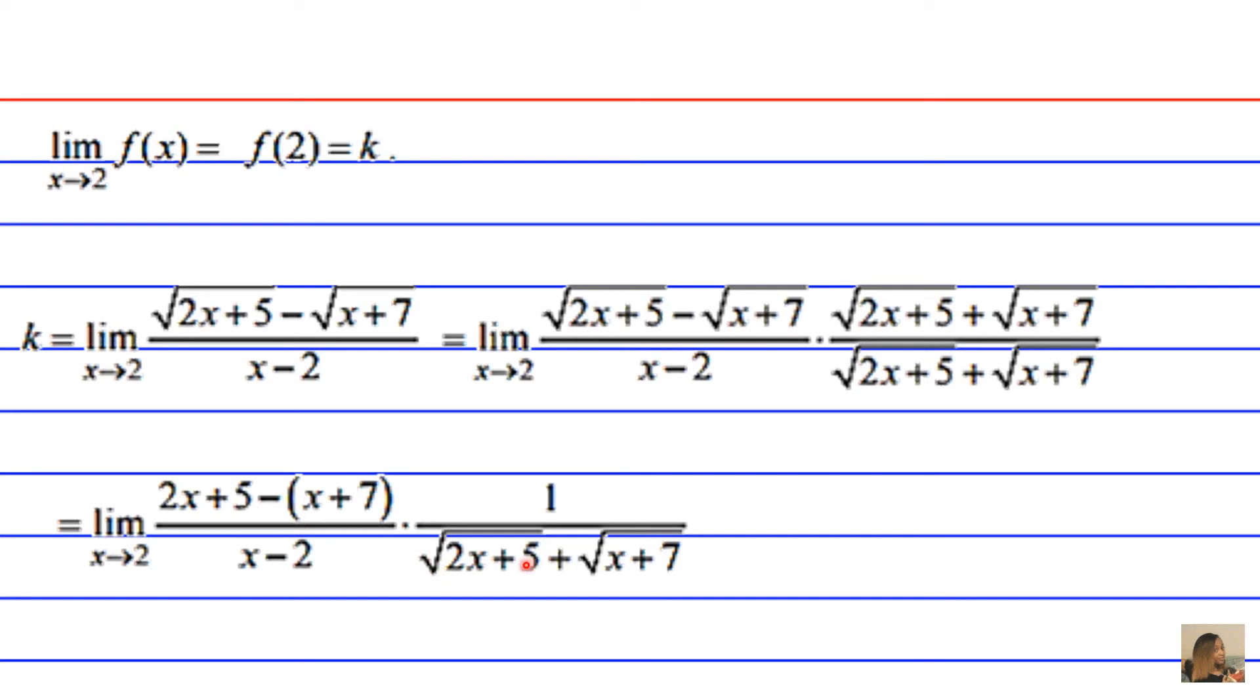And we didn't go ahead and foil out the last term because I want to make something clear to you. If you go ahead and start substituting in 2 without multiplying the denominator, you'll notice that you get something that's close to 0 in the numerator and something that's close to 0 in the denominator.